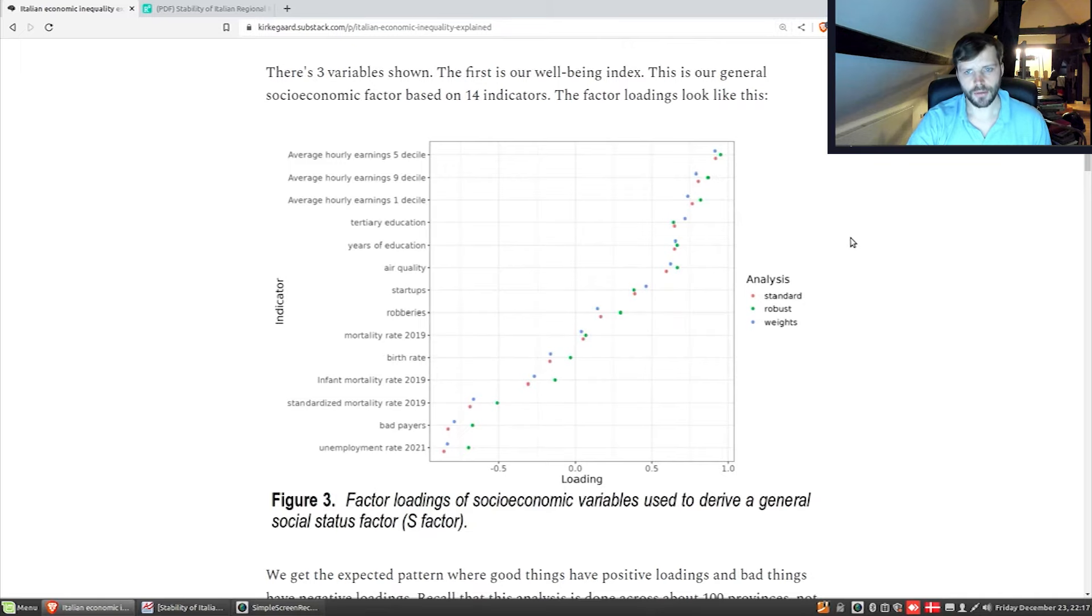Looking in detail at the S-factor, the Wellbeing Index, we were able to compile a bunch of indicators. We've got earnings here, hourly earnings, education levels, some air quality stuff, startup per capita, robberies, mortality, and some other stuff. Generally speaking, the good things have positive loadings, that is to say they're on this side of the plot, and the bad things are over here. Bad payers are people who are unable to pay their own debt, who default. Unemployment rate, people don't work. Standardized mortality, dying too much. Infant mortality, kids dying, and so on.